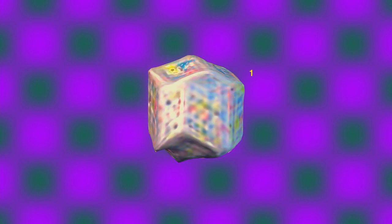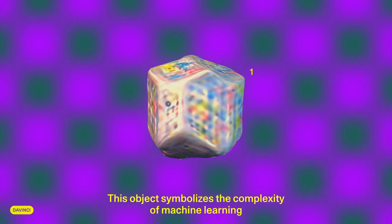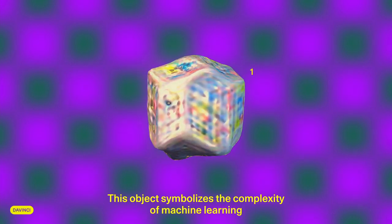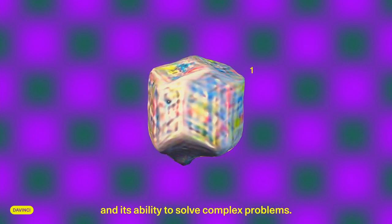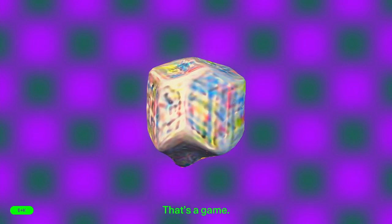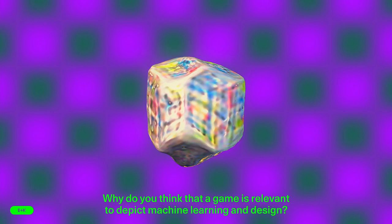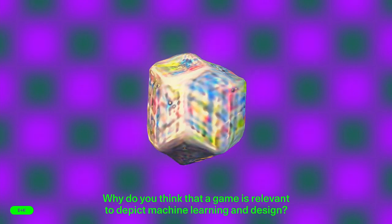With a Rubik's Cube. Why? This object symbolizes the complexity of machine learning and its ability to solve complex problems. That's a game. Why do you think that a game is relevant to depict machine learning and design?